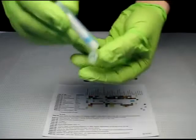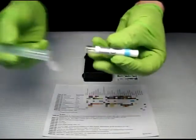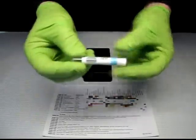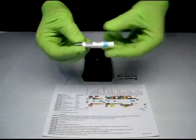Remove the sampler from the clear outer tube. Remove the protective paper from the sticky sampler tip. Dab the sticky sampler tip on the material to be tested.